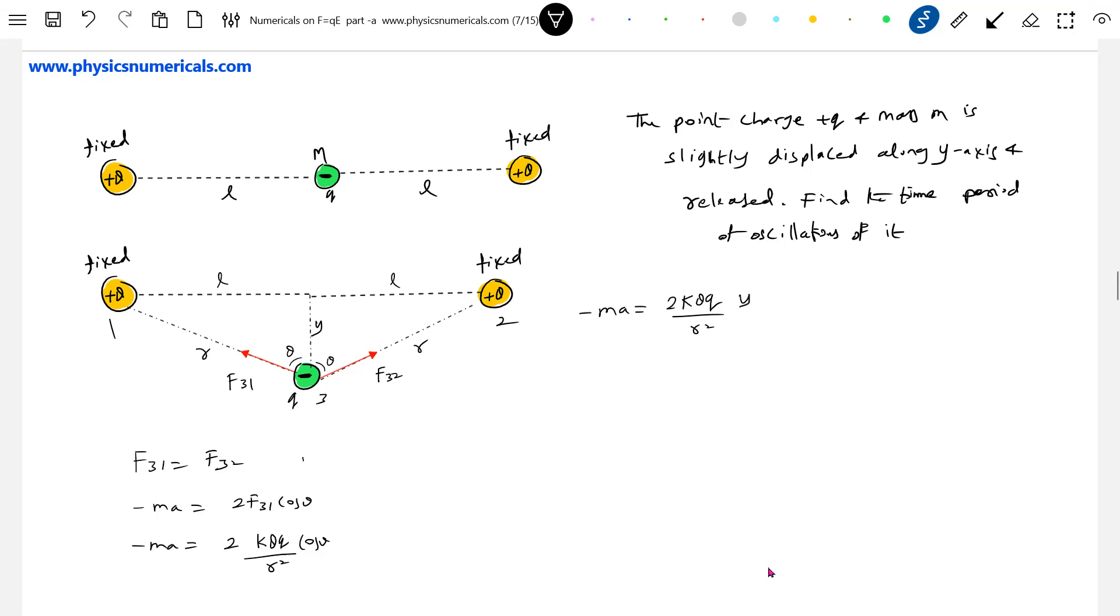Now what is F31? It should be equal to kq/r² cos theta. What is cos theta? It will be y/r. What is r? r will be (l² + y²)^(3/2).